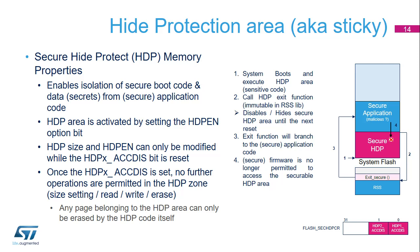When this bit is set, data reads, writes and instruction fetches on the hide protection area are denied. The HDPE access disabled bit can only be cleared by a system reset. The typical usage of the HDPE area is as follows: the system boots and executes code in the HDPE area. The HDPE exit function, present in the ISS lib, is called once the secure boot is completed. This function sets the HDPEX access disabled bit and branches to the secure application. If the secure application attempts to branch to or read data from the HDPE area, the access is denied and an error is signaled.